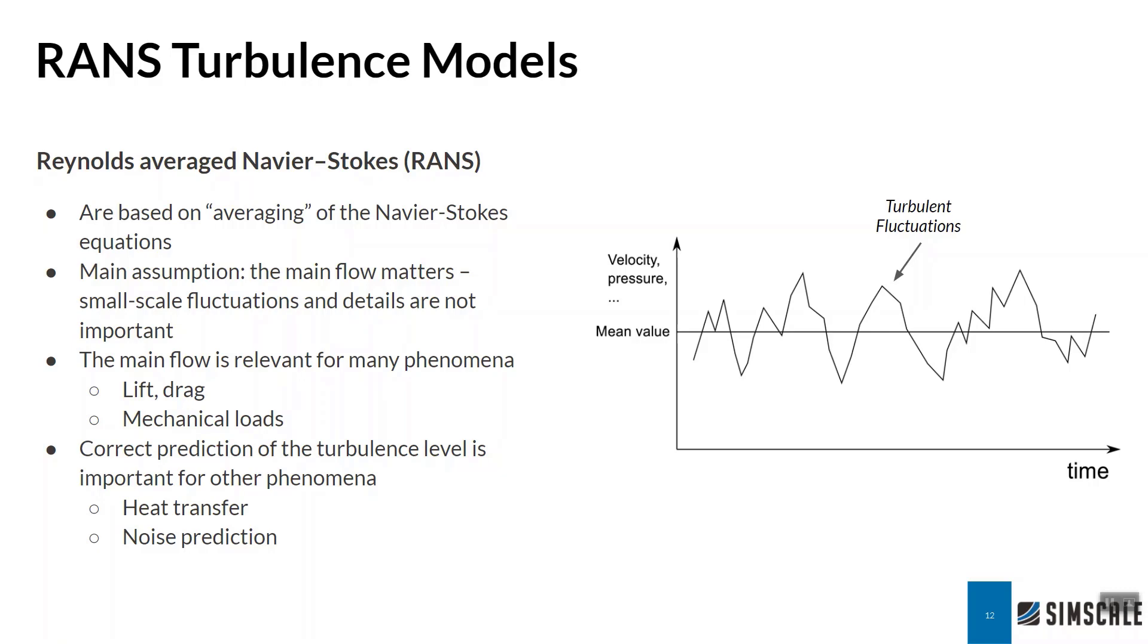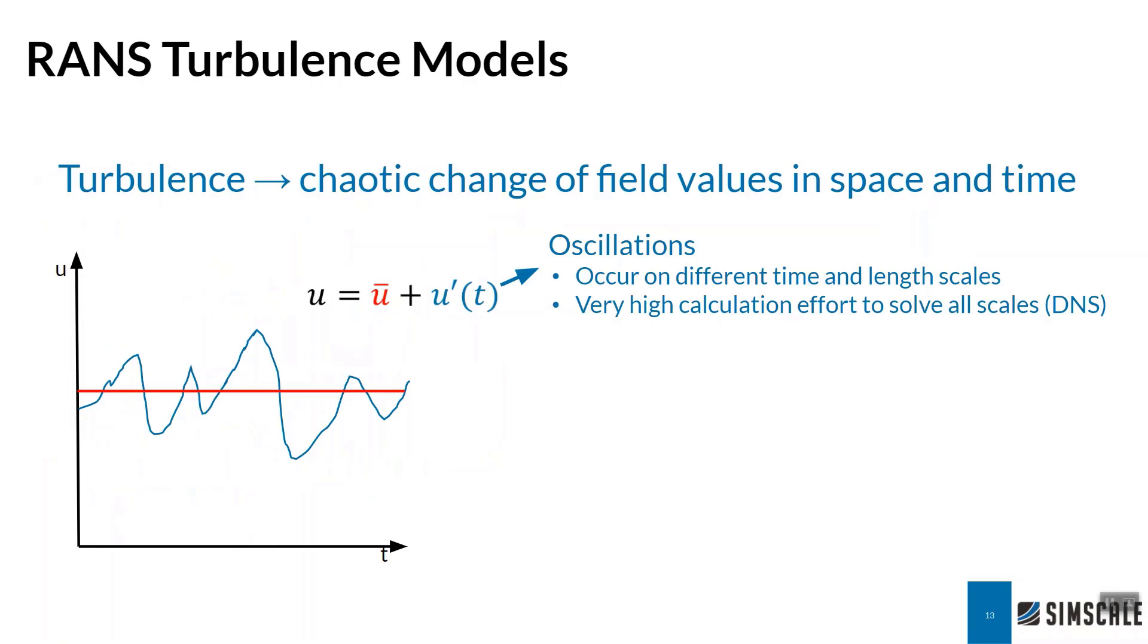For other things like heat transfer and noise prediction, we need to have an idea of the magnitude of these turbulent fluctuations, because they have this additional effect of bringing in extra heat transfer or added diffusion of our momentum, of our heat, of whatever physical property that it may be.